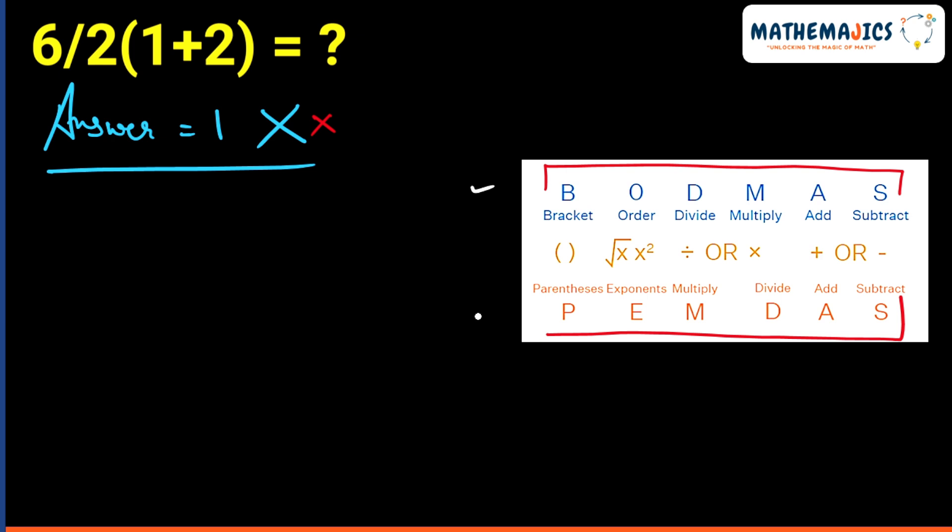According to BODMAS and PEMDAS, we need to solve the bracket first. Let's solve the bracket. So if we solve the bracket, we will get 3.